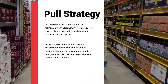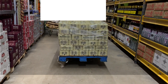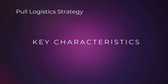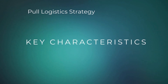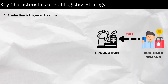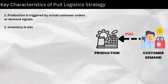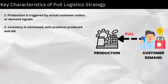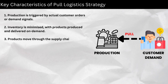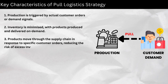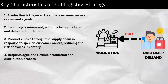Key characteristics of pull logistic strategy: one, production is triggered by actual customer orders or demand signals; two, inventory is minimized with products produced and delivered on demand; three, products move through the supply chain in response to specific customer orders, reducing the risk of excess inventory.